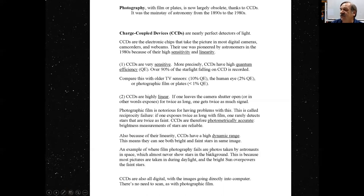An example where film photography fails are photos taken by astronauts in space, which almost never show stars in the background. A lot of conspiracy theorists would tell you that's because they're all faked. It's all a hoax. Well, folks, I grew up in central Florida. I saw the launches of the Saturn 5 moon rockets, and if that was a hoax, it sure was a good one because you could see them from my parents' house. You could see them from my parents' house 60 miles away. The real reason is because most pictures are taken during daylight. The bright sun overpowers the faint stars. CCDs are also all digital with images going directly into a computer. There's no need to scan. As with old-fashioned chemical photographic film.